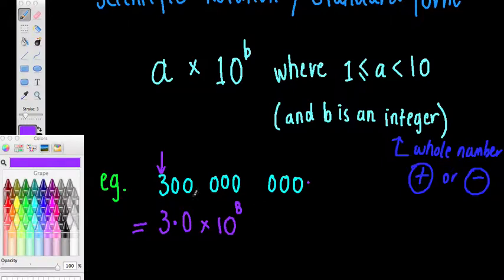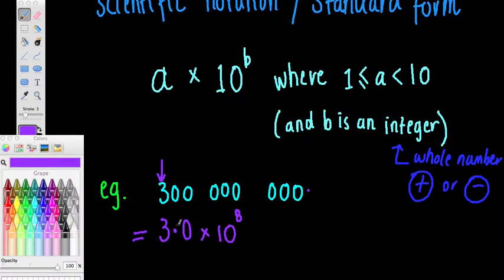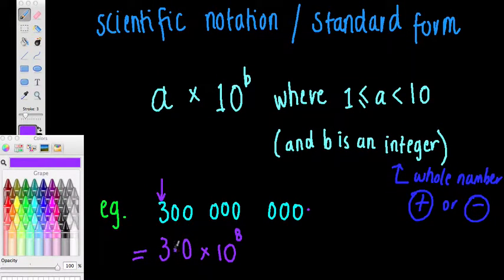Now this is a lot easier to write. 3 by 10 to the 8, instead of writing 3, 0, 0, 0, 0, 0, 0, 0, every time you use that number. So this is the whole point of scientific notation, to make it easier for ourselves. So that's our answer, 3 by 10 to the 8. And just checking, this number here, 3, is it between 1 and 10? Yes, it is. If I was to pick the decimal point down here, we'd see that we'd have 30, and 30 is not between 1 and 10. So that would be wrong.